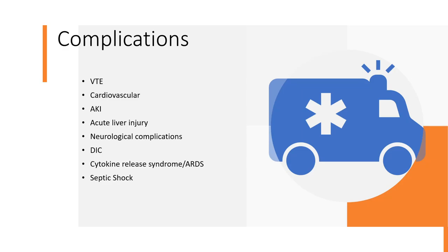Complications will be covered in further detail in later lectures, but the more common ones are AKI, VTE, and cardiovascular complications. Quite a few patients have had PE on top of coronavirus. AKI is one of the more common complications, and there is a challenging balance with fluids because patients are also prone to ARDS — in ARDS you must not give fluids, but if AKI is concurrent, what do you do? Other complications that can cause death include DIC, ARDS, and septic shock, though these are less common than VTE and AKI.